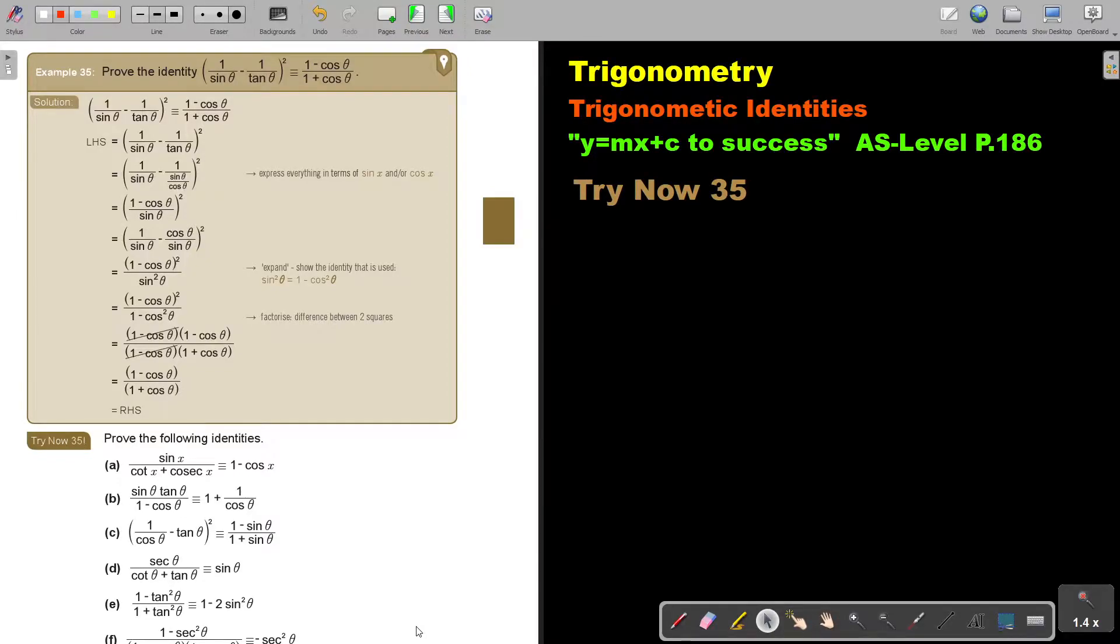In this video, we will continue with trigonometric identities. You will find this on page 186 in the Namibia AS level mathematics textbook Y equals MX plus C to success.